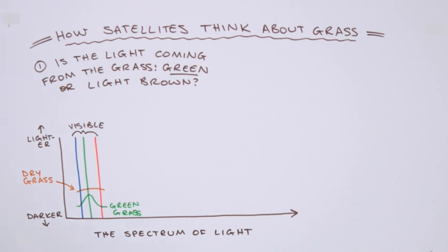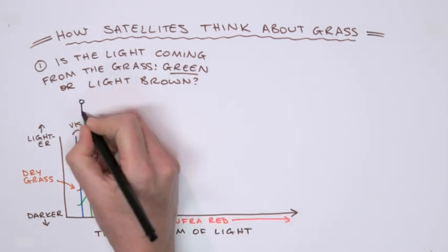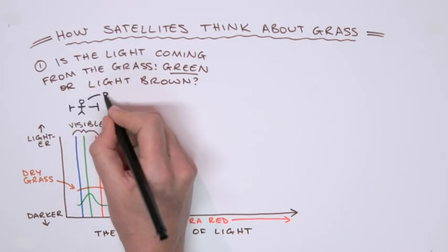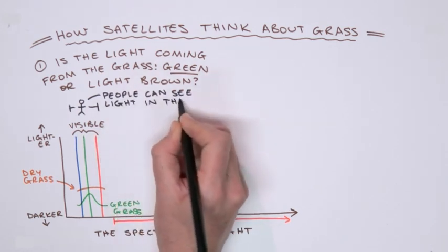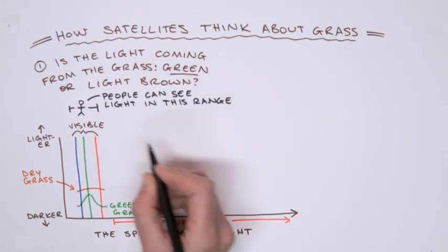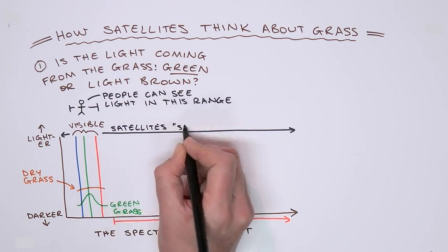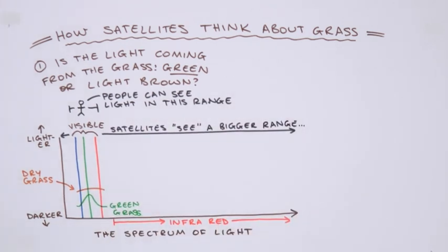At this point, humans and satellites start to think differently. Firstly, unlike the satellite, we can walk around in the grass receiving up-close information about height, brittleness and temperature. Secondly, the satellites can detect infrared light which we cannot see.